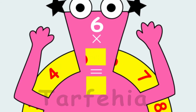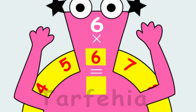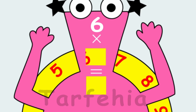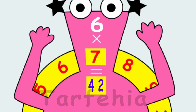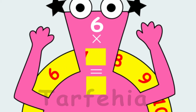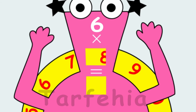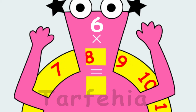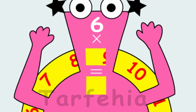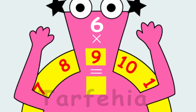Six times six equals thirty-six. Six times seven equals forty-two. Six times eight equals forty-eight. Six times nine equals fifty-four.